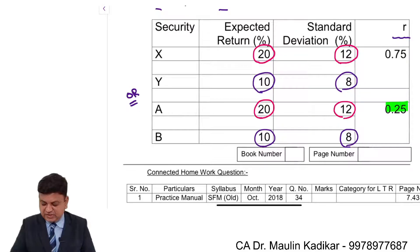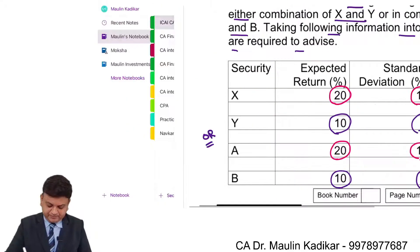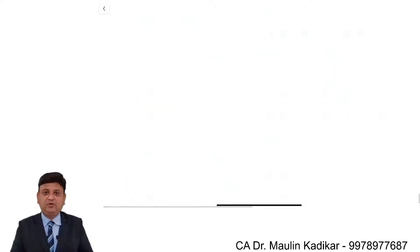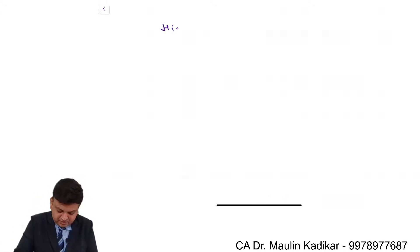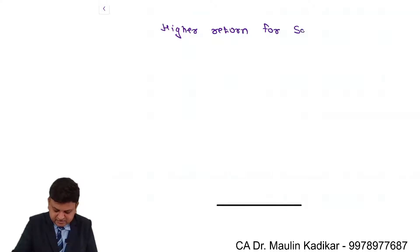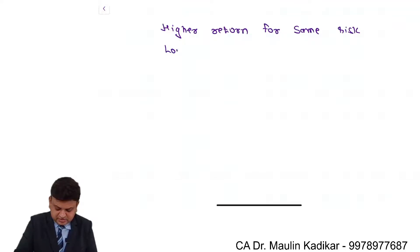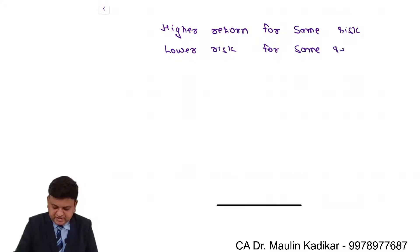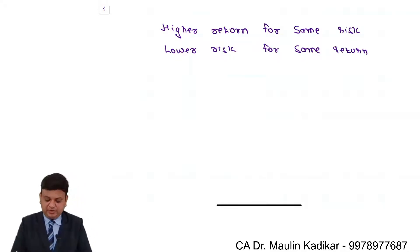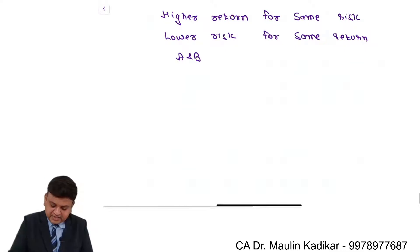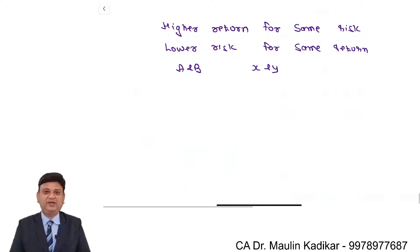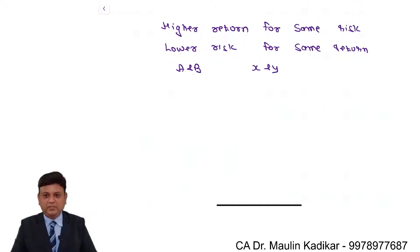We should make investment, keeping all other things constant, in the combination where the correlation coefficient is lower. If we invest in securities with a lower correlation coefficient, we will be able to get higher return for the same risk, or take lower risk for the same return. Therefore, the investment should be made in the combination of A and B instead of X and Y. We can observe that investment in A and B has a lower correlation coefficient in comparison to X and Y, all other things being the same. Hence, investment should be made in the combination of A and B instead of X and Y.